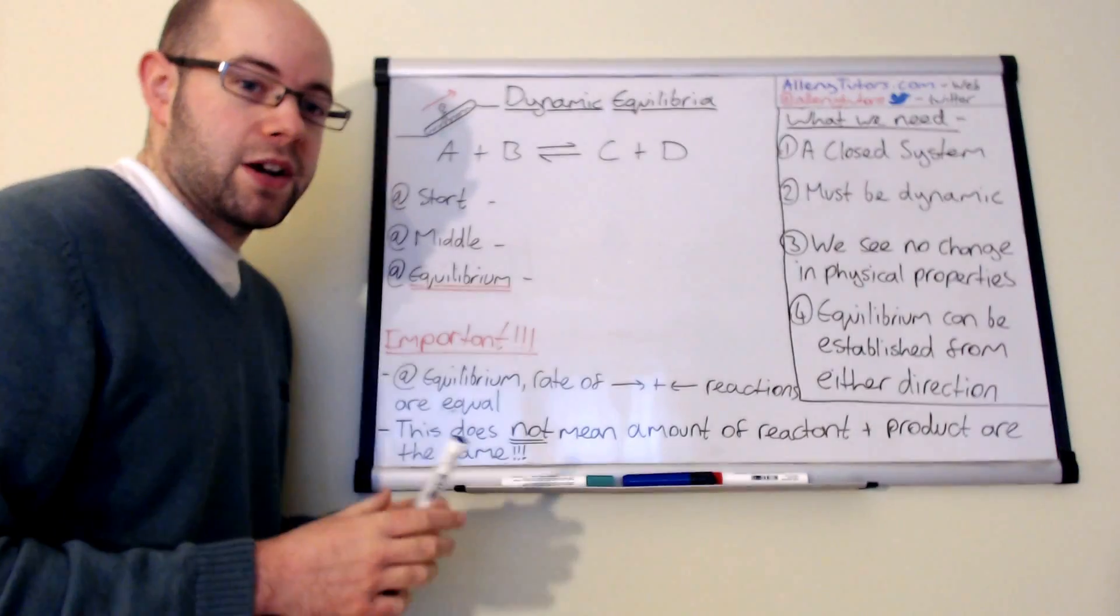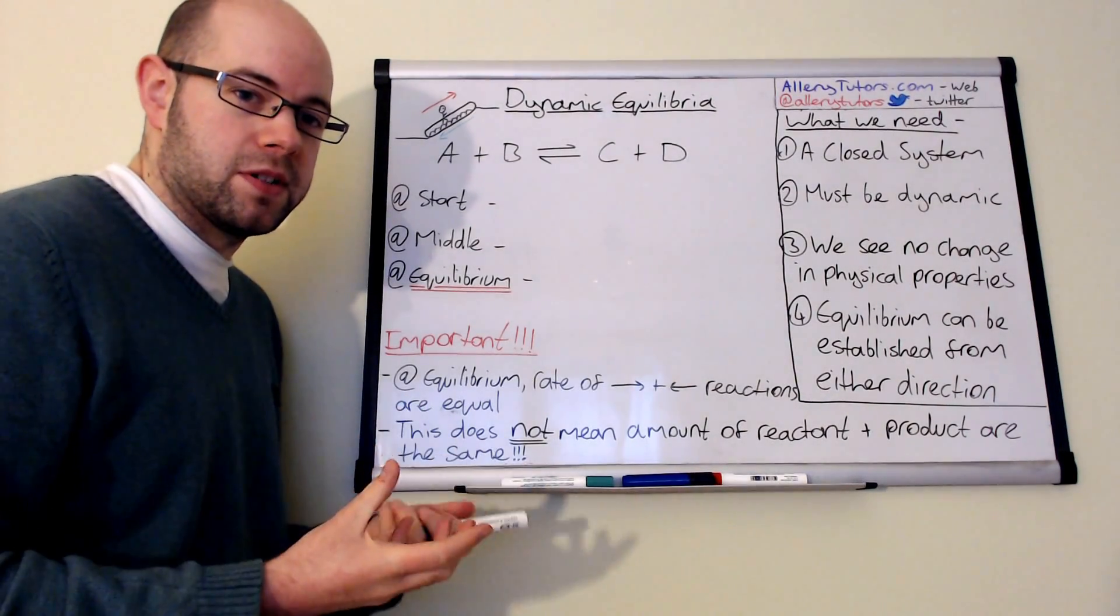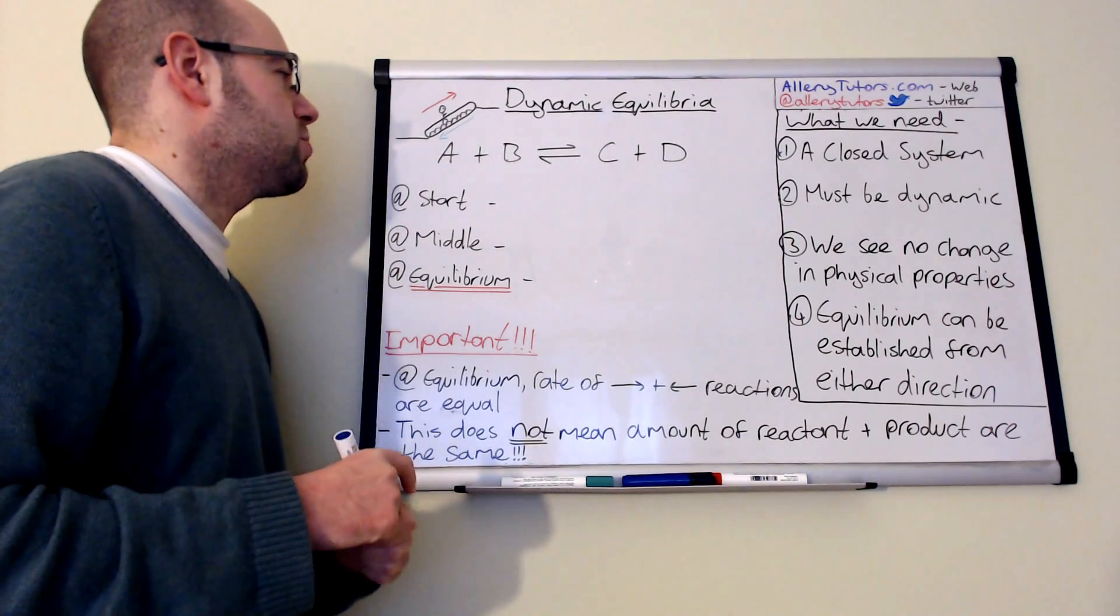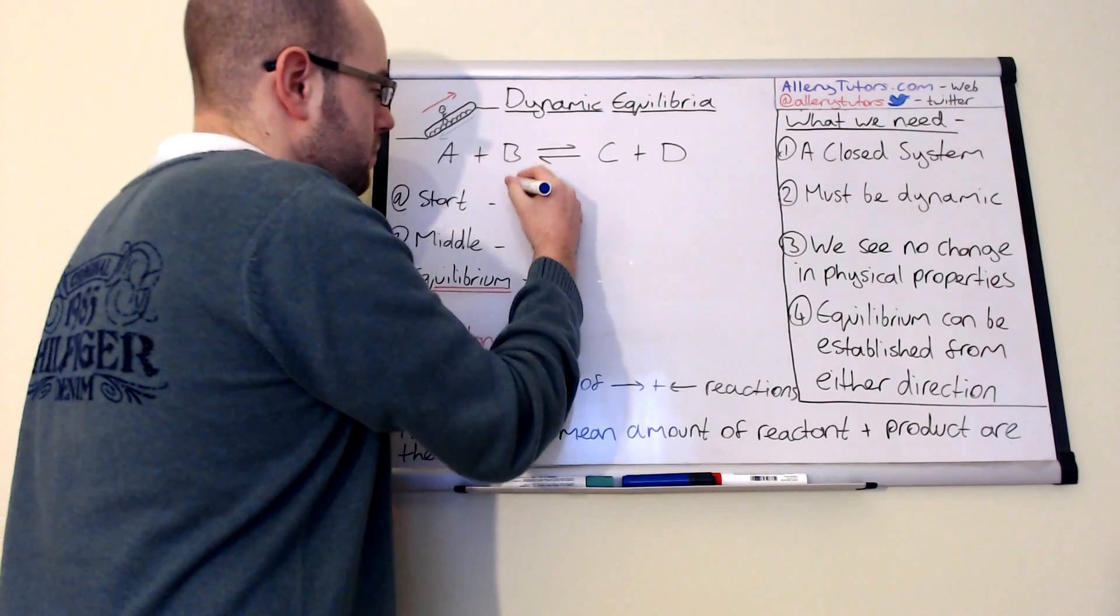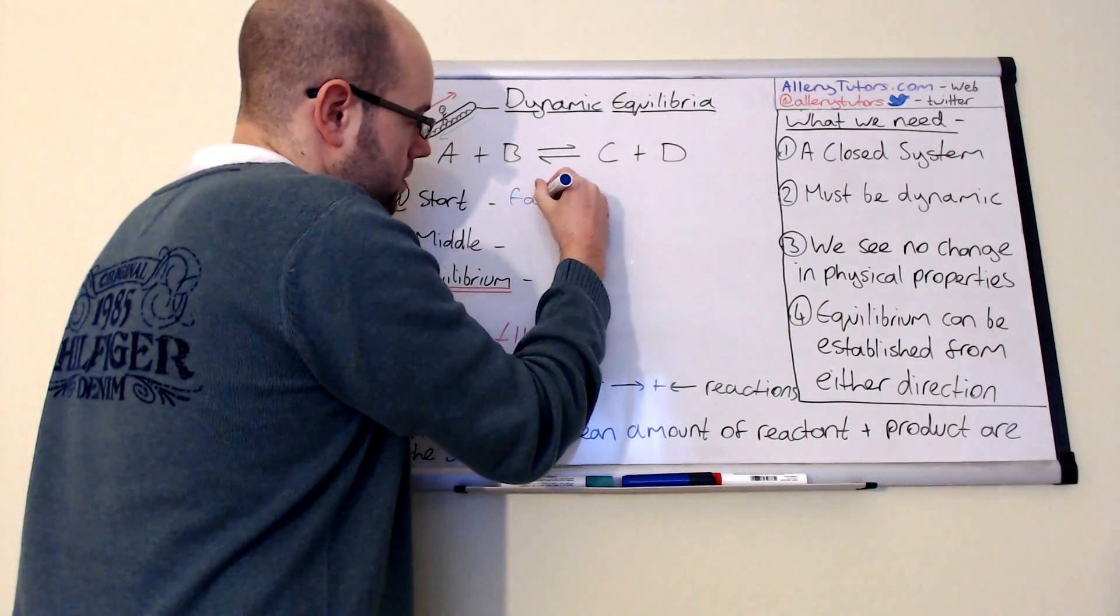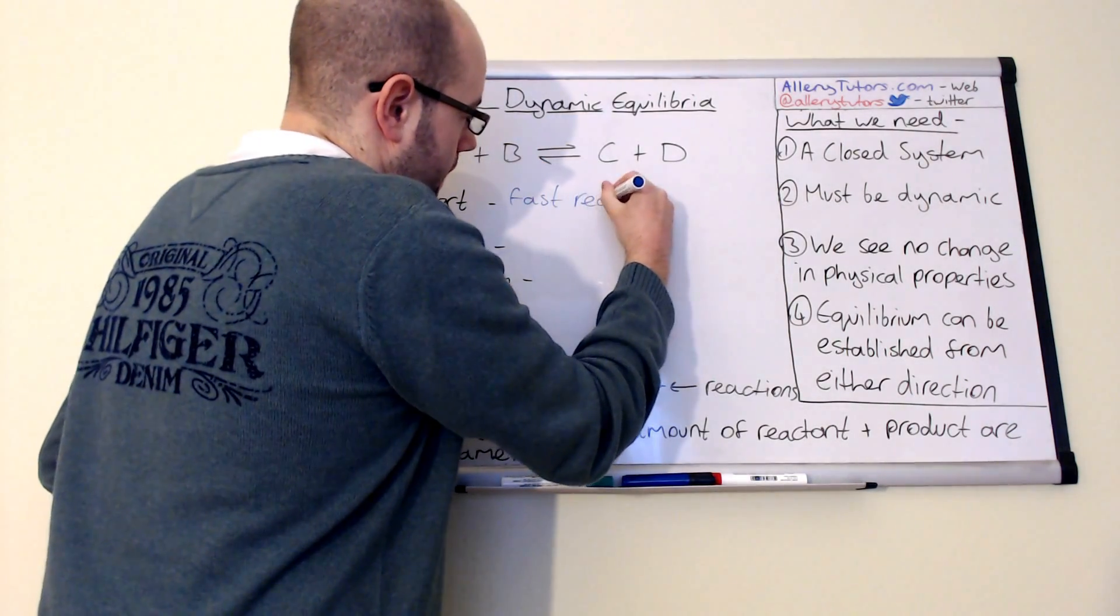Now you can imagine that when this reaction proceeds, we will have a very quick reaction to start off with because we have an abundance of A and B. So at the start, equilibrium is actually, well, A and B reacts a lot. So you get a fast reaction. Fast reaction.